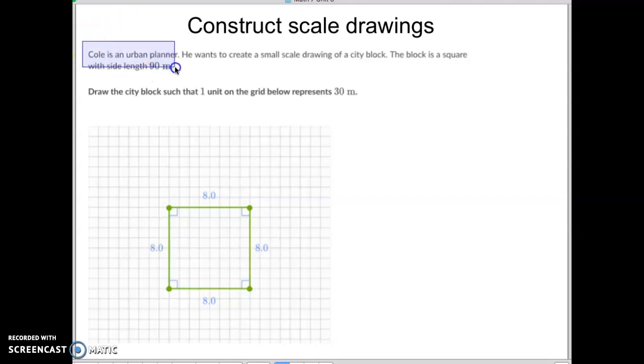Cole is an urban planner. He wants to create a small scale drawing of a city block. Note that the block is a square with a side length of 90. So we want it to go 90 meters by 90 meters by 90 meters by 90 meters. Here's what we notice.